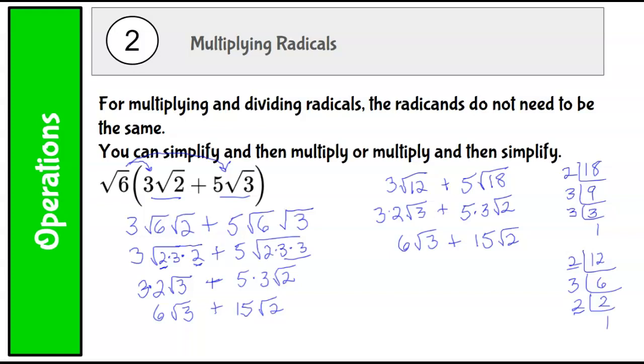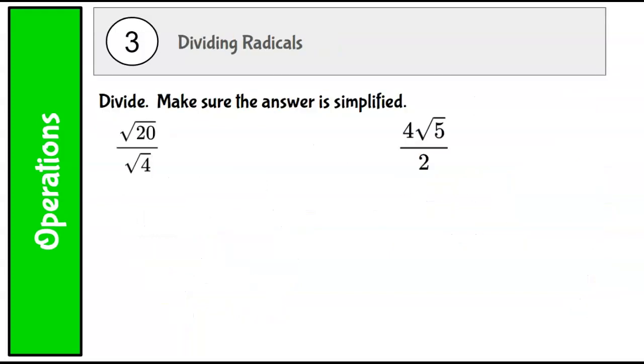All right, last part is to talk about the division. Division is the same way. I can divide and then simplify or simplify and then divide. So I'm going to go a couple of different directions with this one. So first, I could just take 20 divided by 4. They're both under the radical. So I can just divide them and get the square root of 5. And that's it. That can't be simplified anymore.